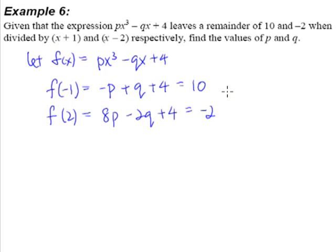From here, we can simplify this equation to become -p + q = 6. And this equation, we simplify it, we get 8p - 2q = -6.